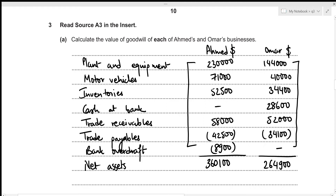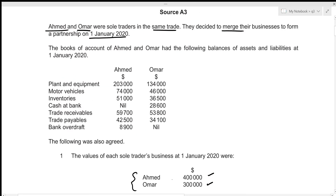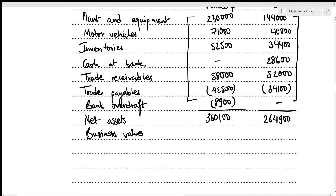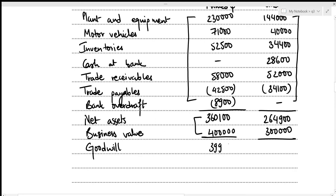Goodwill is simply the difference between business value and net assets. For Emad: $400,000 − $360,100 = $39,900. For Omar: $300,000 − $264,900 = $35,100. This concludes Part 1.